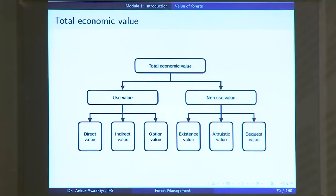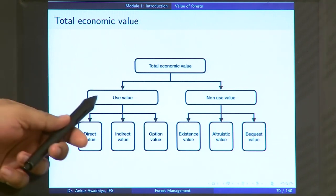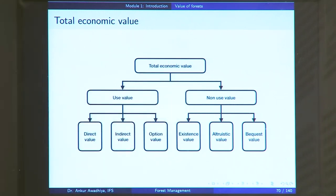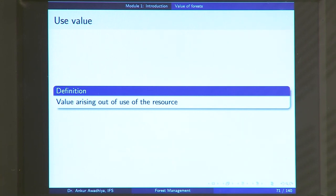We begin with the total economic value. The total economic value of a forest, or a natural resource, or anything for that matter, is a sum of two things: the use value and the non-use value. A use value is a value arising out of the use of a resource. For example, you are using a forest to get timber out of it, and because you get this timber by using the forest, the value you derive from this timber is a use value.